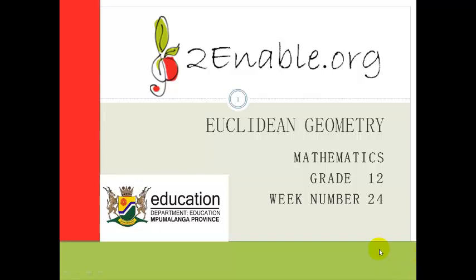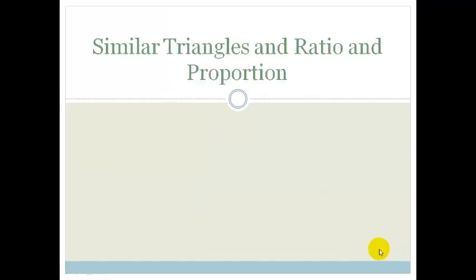Today we talk. In this lesson in Euclidean Geometry, we're going to be looking at similar triangles in ratio and proportion and how they relate. So basically, we're just going to be building on with what we already know.